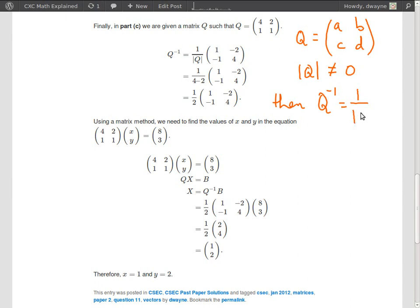1 over the determinant of the matrix times D minus B minus negative C A. Alright, so that is we switch the entries A and D and we take the negative of the entries B and C.